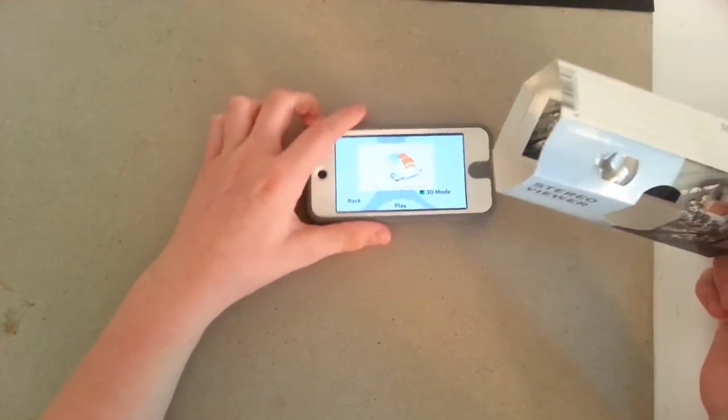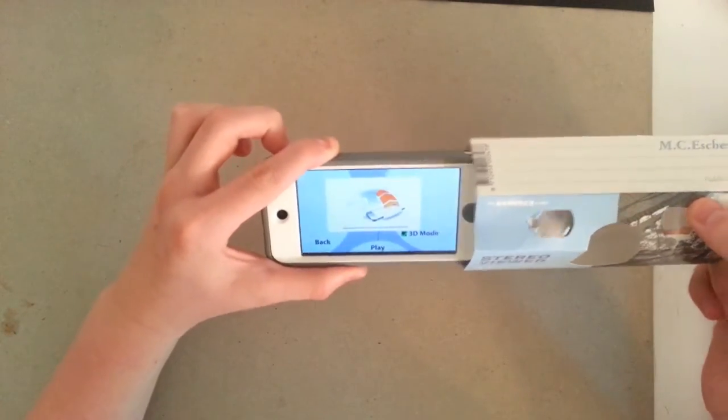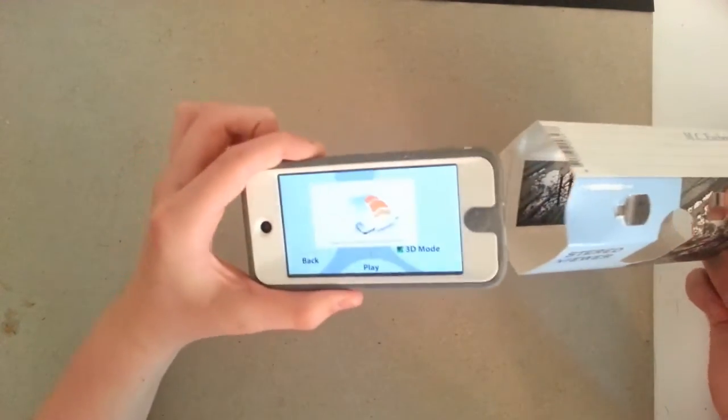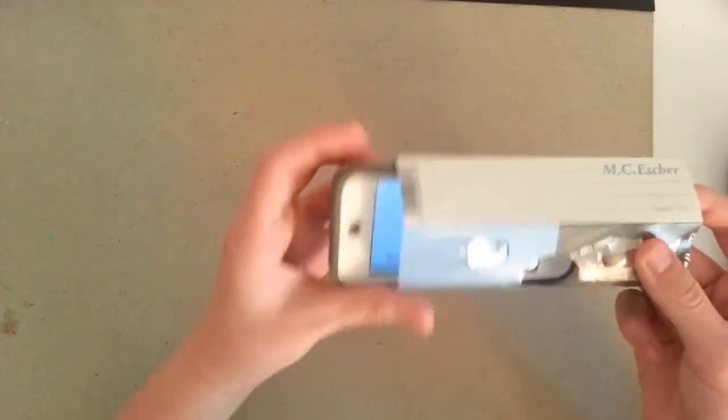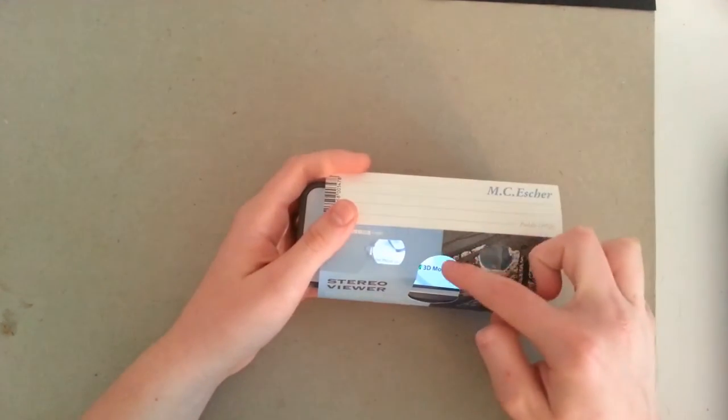So what you want to do is just line up the stereo viewer with your device and just hook it through and line it up with the center line right here.